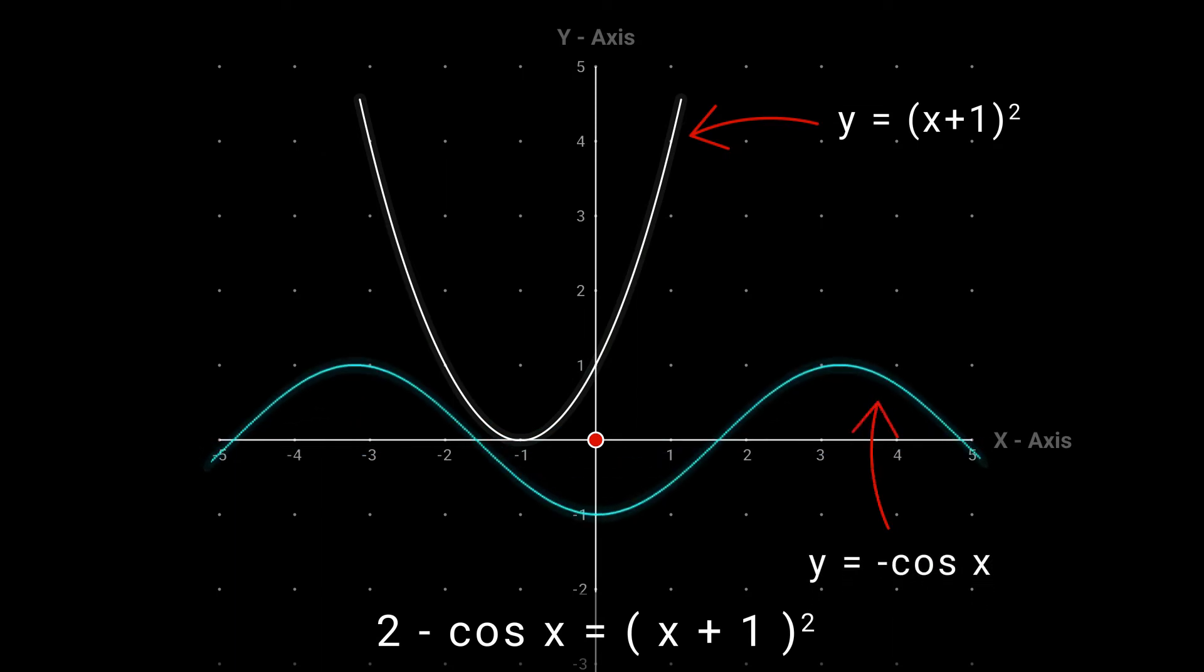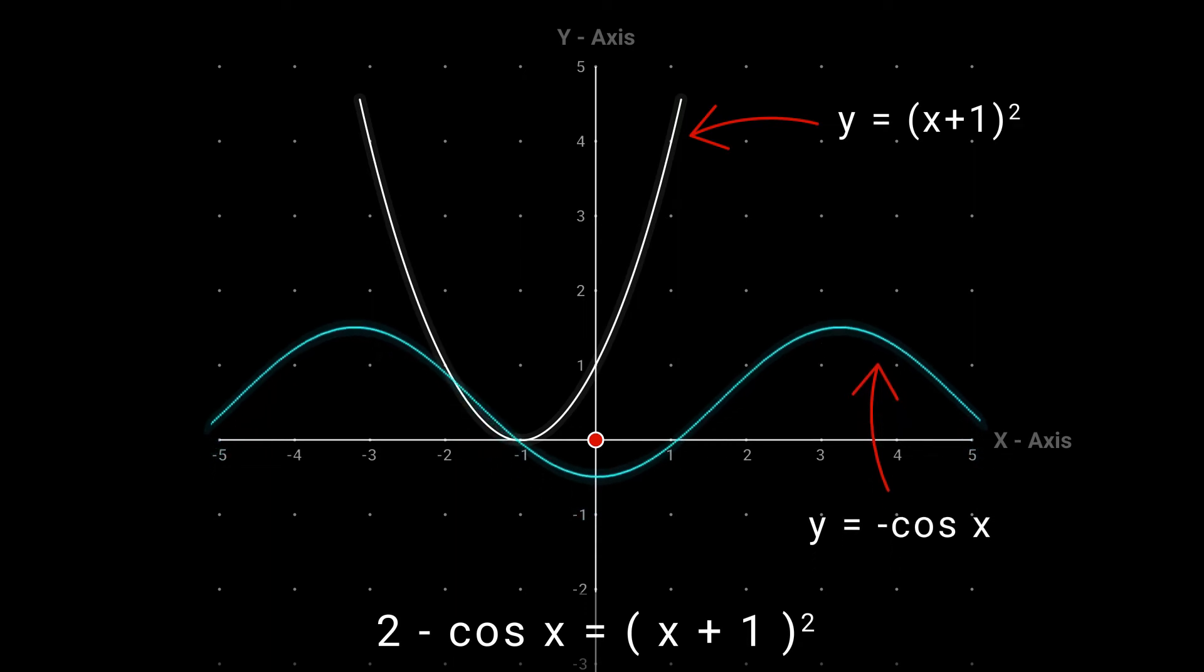And after that, we have to add 2. When we add 2 to the graph, the graph of minus cos x shifts upward through 2 units.